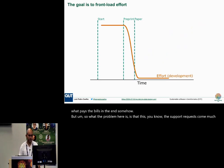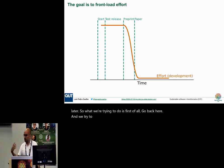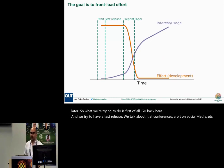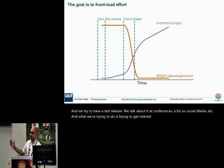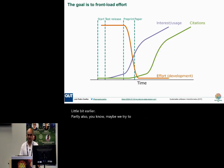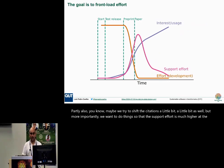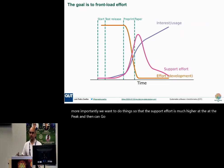The problem is that support requests come much later. What we're trying to do is go back and have a test release, talk about it at conferences, a bit of social media, etc. We're trying to get interest and usage to start going up a little bit earlier, and maybe shift the citations a little bit as well. More importantly, we want to do things so that the support effort is much higher at the peak and then can go down over time.